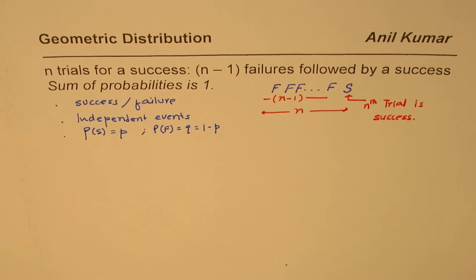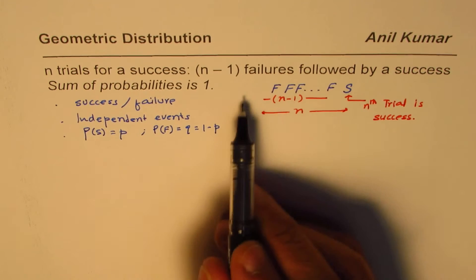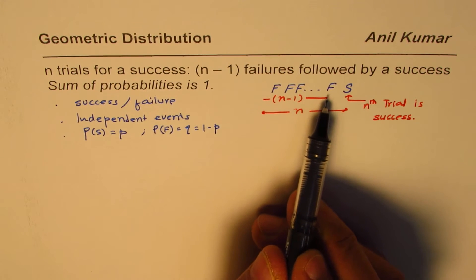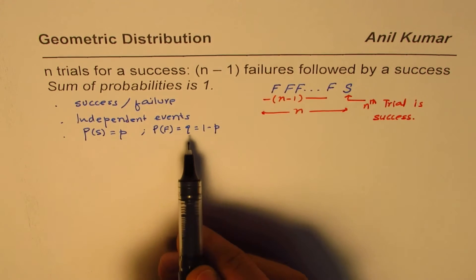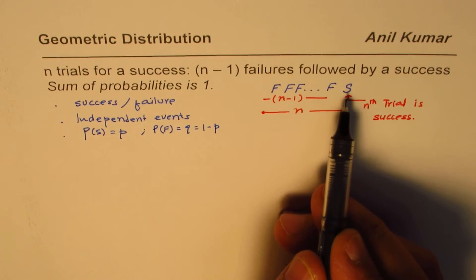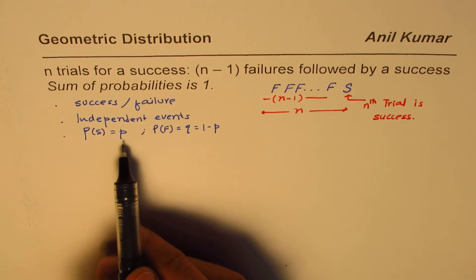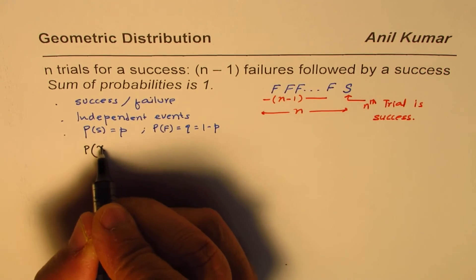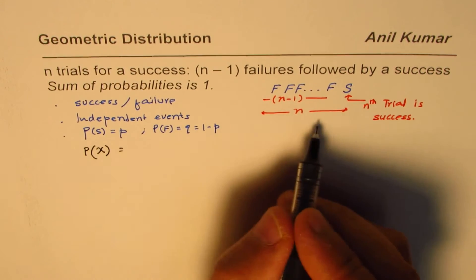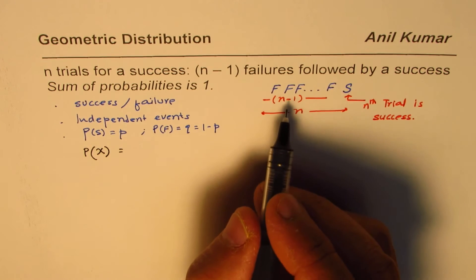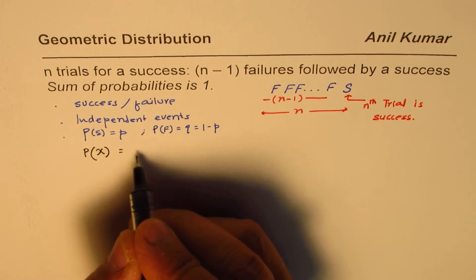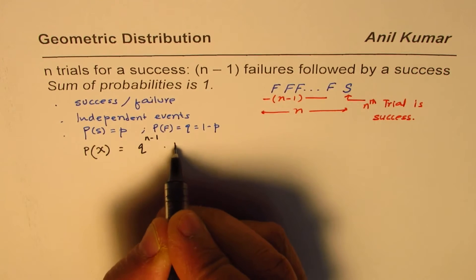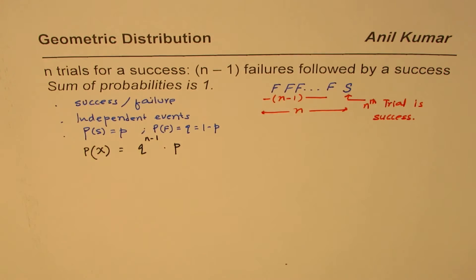Now, let's look into the probability of such an event. So if we have n minus 1 failures, probability of each being q, followed by one success with probability p, then what is the probability of this random variable n? That is n minus 1 failures, that means q to the power of n minus 1, times p. So that becomes the probability.